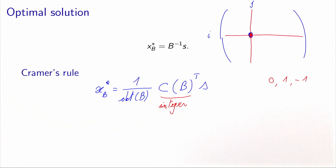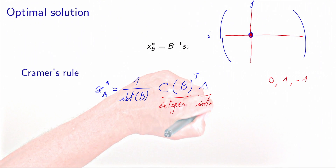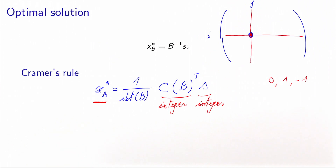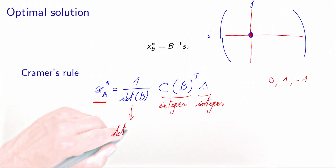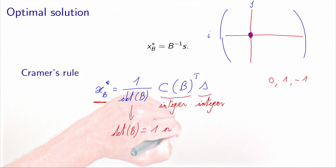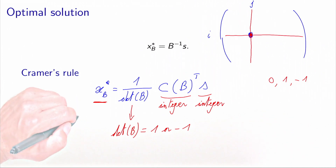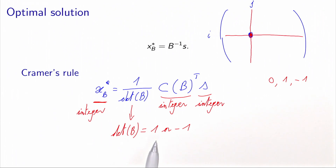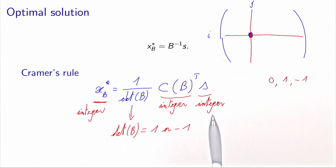Suppose now that the problem is defined such that the demands and supplies are also integer. In that case, if we want to obtain an x*_B which is integer, we would need the determinant of B to be equal to 1 or possibly minus 1. If it is the case, we have the guarantee that x*_B is integer. And actually, in the case of the transshipment problem, the determinant of B is indeed 1 or minus 1, and therefore, if the data of the problem is integer, the optimal solution is automatically integer.